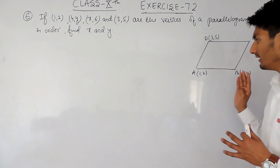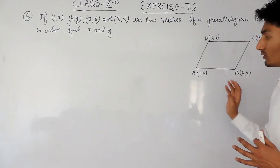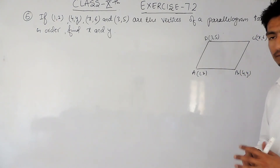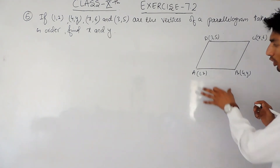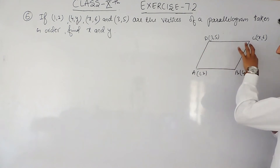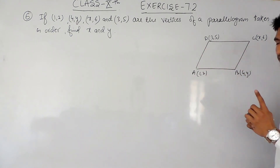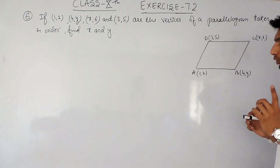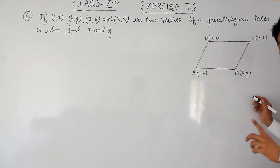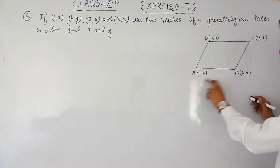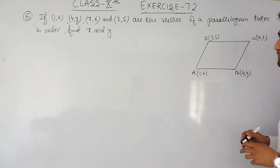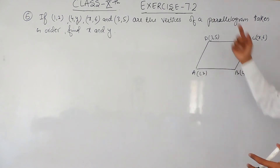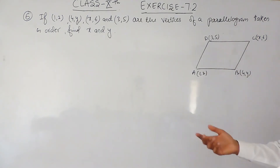Now, if I ask you what are the properties of a parallelogram, you will say that in a parallelogram opposite sides are parallel. This is the first property. However, this is already given to you as a parallelogram and you have to find x and y.